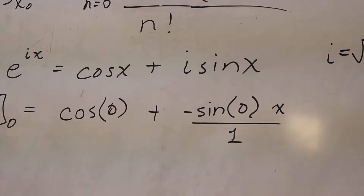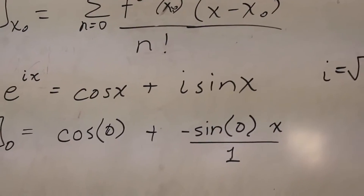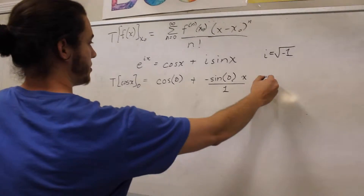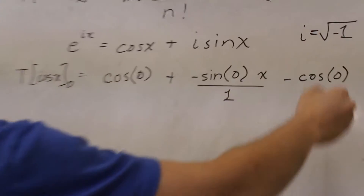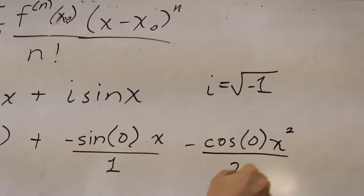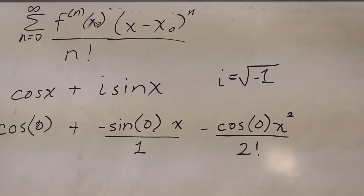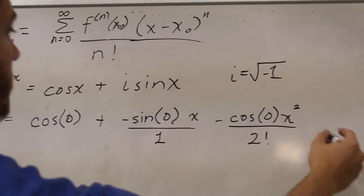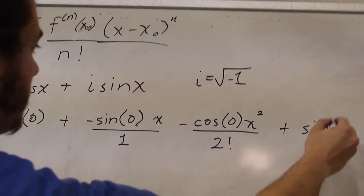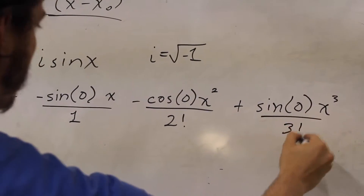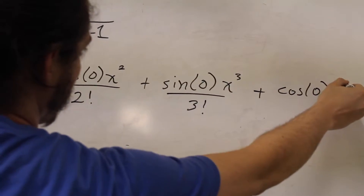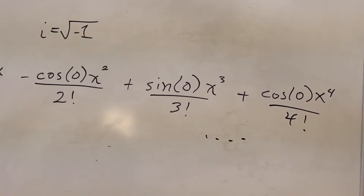Continuing the series: the third term comes from the second derivative, which is minus cosine, evaluated at zero, times x squared over two factorial. The fourth term from the third derivative is plus sine at zero, times x cubed over three factorial. Then we have plus cosine at zero times x to the fourth over four factorial, and the pattern goes on and on.